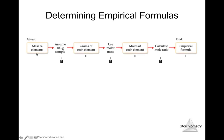To summarize the process: start with mass percent of each element, assume a 100-gram sample to convert percent to grams, use molar mass to convert grams to moles, then divide by the smallest mole value to get the integer ratio. Those integers become the subscripts in the empirical formula.